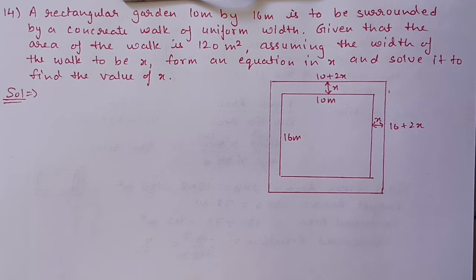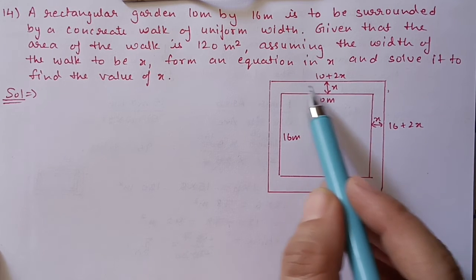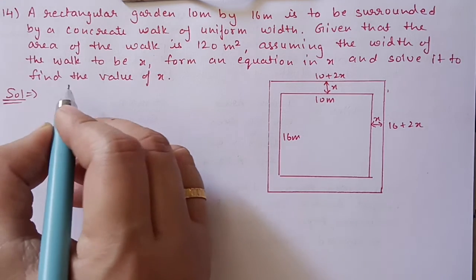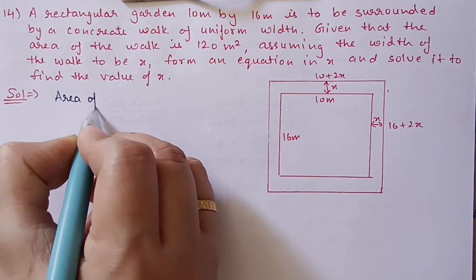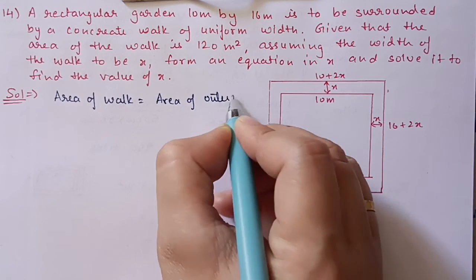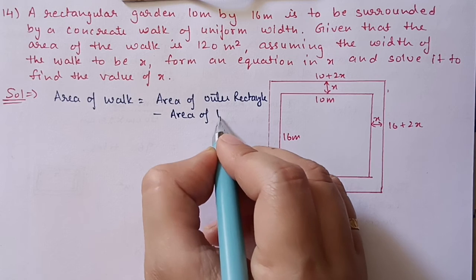Question 14: A rectangular garden 10 meters by 16 meters is to be surrounded by a concrete walk of uniform width. Given that the area of the walk is 120 square meters, and assuming the width of the walk to be x, form an equation in x and solve it to find the value of x. The walk is built all around the garden at width x.